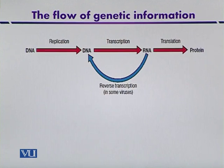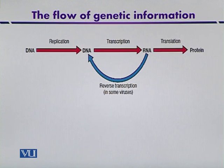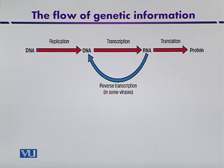This concept is very famous in molecular biology — you may be well familiar with the central dogma of molecular biology, which states how genetic information flows from one macromolecule to the next. Information can be transferred from DNA to DNA by the process of DNA replication.